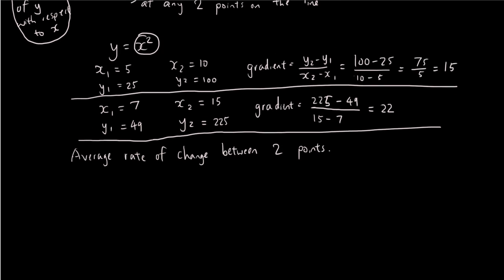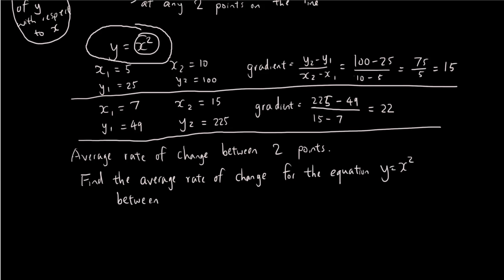So far that's what we can do, right? Because the rate of change of this equation y equals x squared is going to be different depending on which two points you choose. So if the question says find the rate of change, find the average rate of change for the equation y equals x squared between x equals 5 and x equals 10.